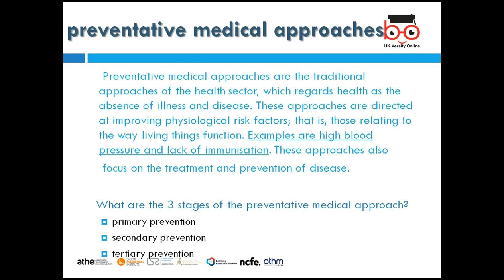Preventive medical approaches are the traditional approaches of the health sector. They bring in GPs and consultants to help prevent illness. This approach is directed at improving physiological risk factors — for example, high blood pressure and lack of immunization. It is focused on treatment and prevention. The three main stages are primary prevention through GPs, secondary prevention, and tertiary prevention through teaching hospitals.